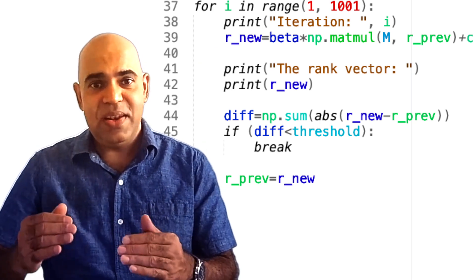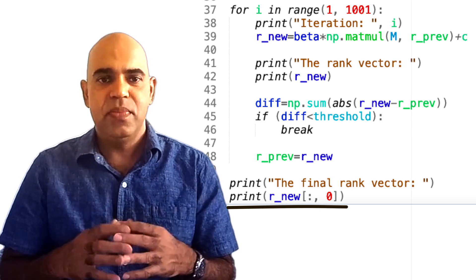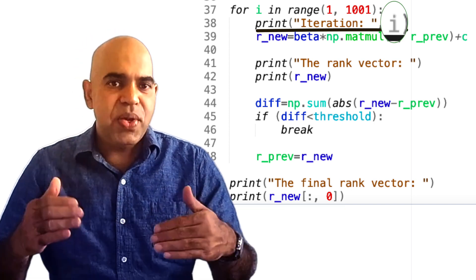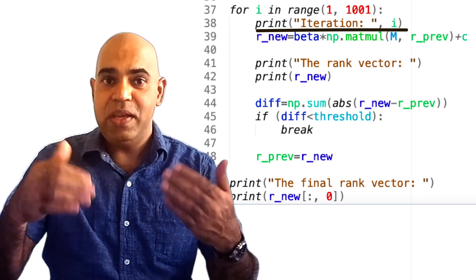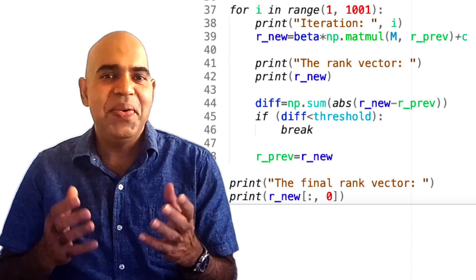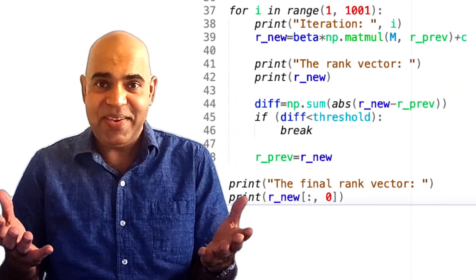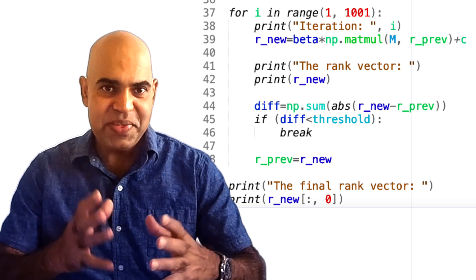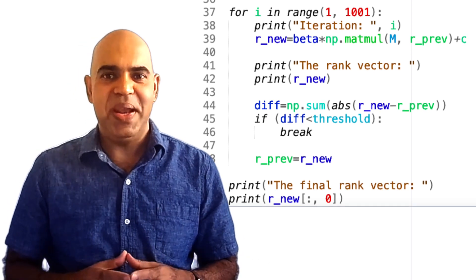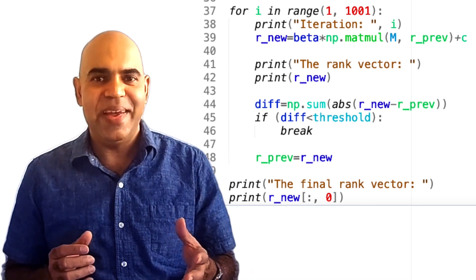Finally, once the loop has finished, we print the final rank vector. Note that I also printed the iteration numbers so that at the end we know how many iterations the page rank algorithm went through. And there we have it. This is the page rank algorithm using Python. It handles the random surfer model and spider traps. And it's robust enough to handle any web graph you throw at it.